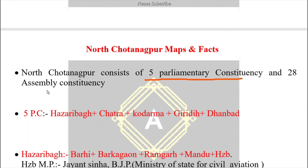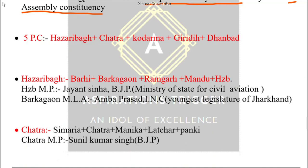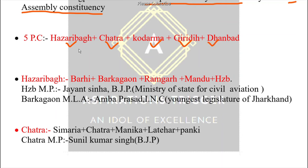North Chhota Nagpur consists of 5 Parliamentary Constituencies and 28 Assembly Constituencies (28 Vidhan Sabha Kshetras). Some of these constituencies have special data worth remembering.